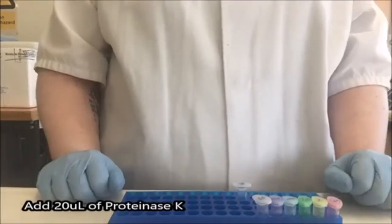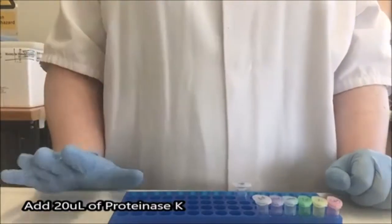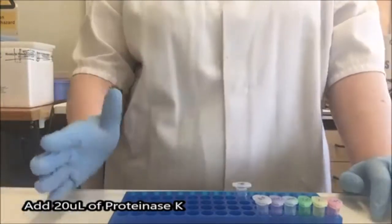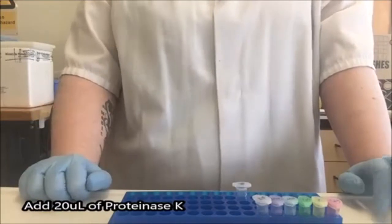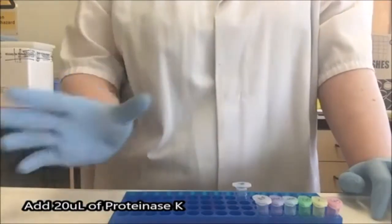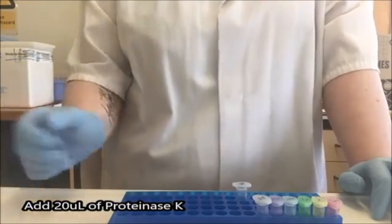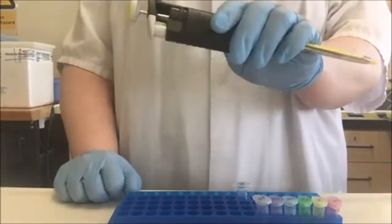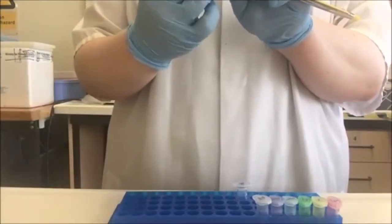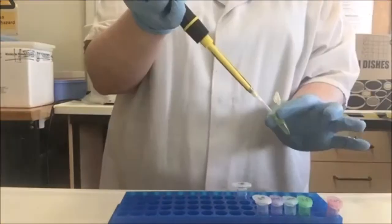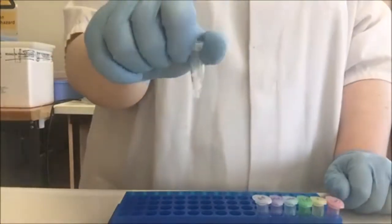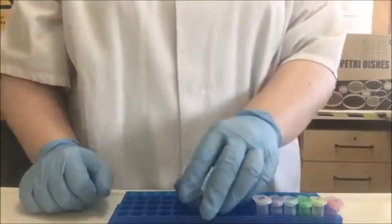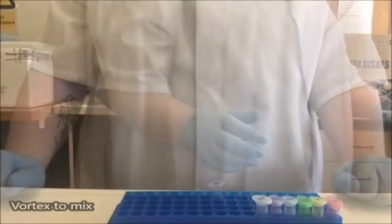The next thing I need to do is add some Proteinase K. Proteinase K is an enzyme. We know that automatically because it ends with -ase. And we know it's an enzyme that dissolves protein because it's a proteinase. I'm going to use my yellow pipette again, this time setting it to 20 microliters. I now have 200 microliters of fluid in my tube. These now need to be mixed. So I'm going to take these over to the vortex.